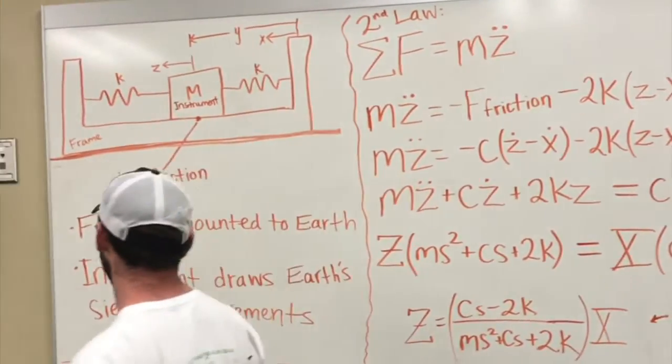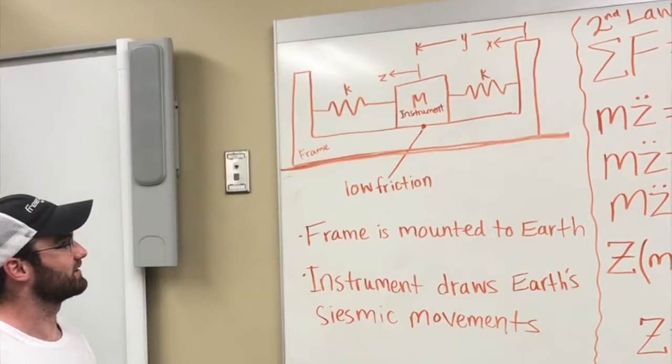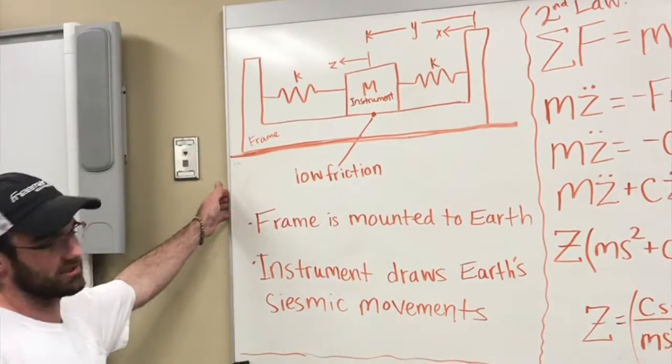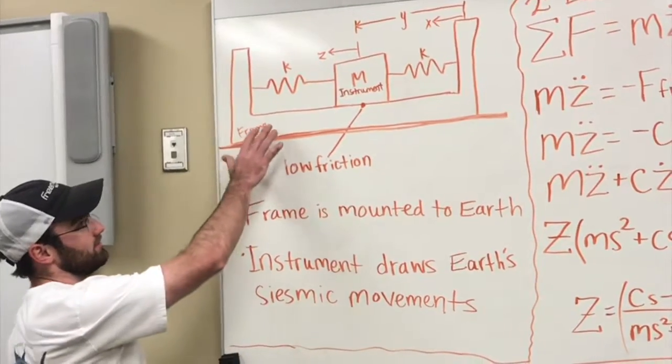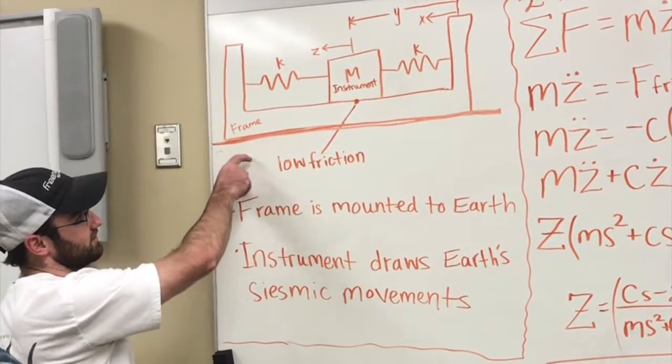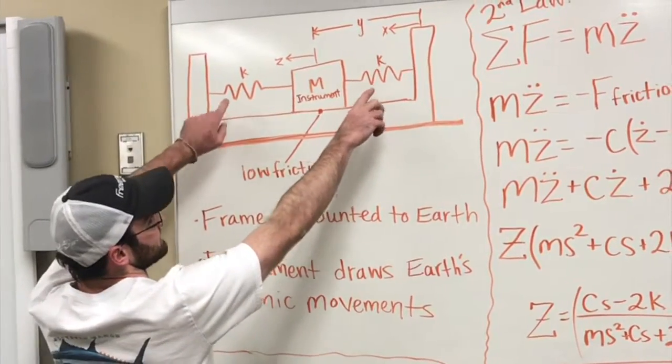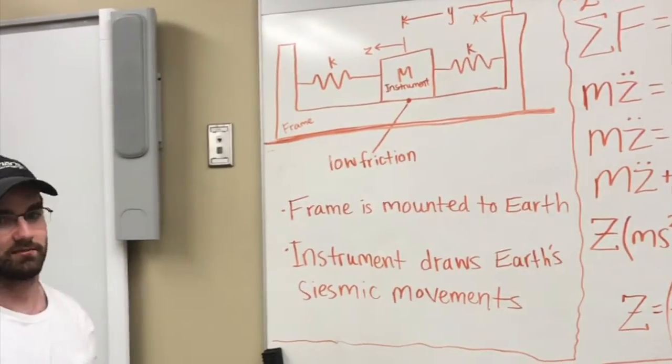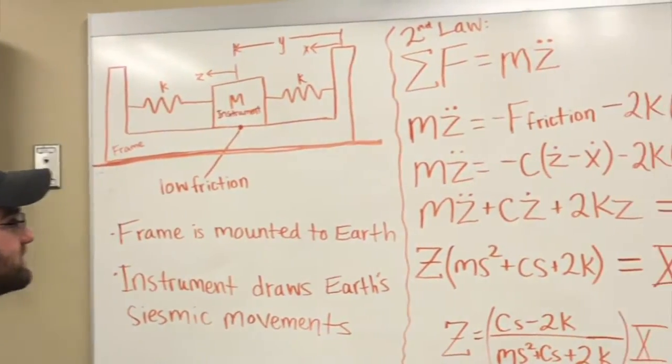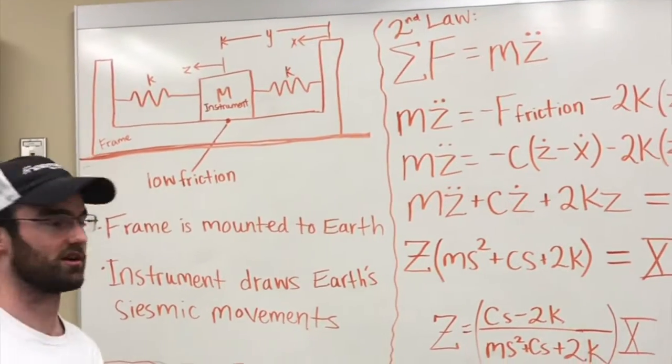We were given a seismograph system in order to represent the motion of the earth's movement. We were given a frame that is bolted to the earth, an instrument with two springs on each side, and on this frame there's low friction. We're asked to derive a transfer function in response to the earth's movements.